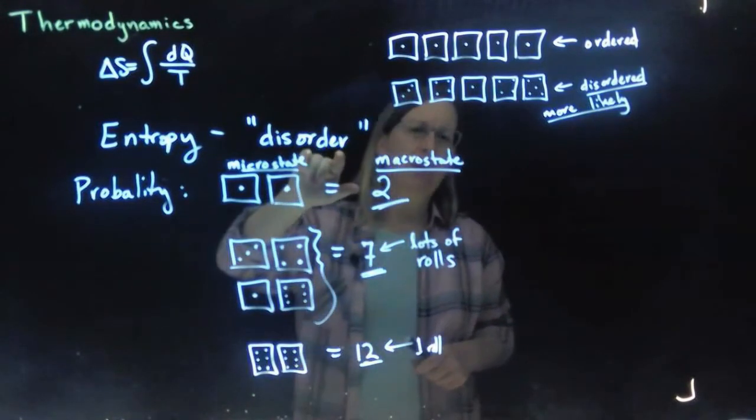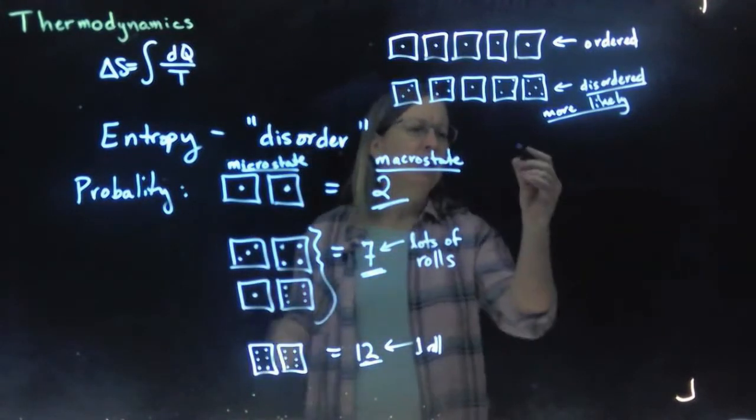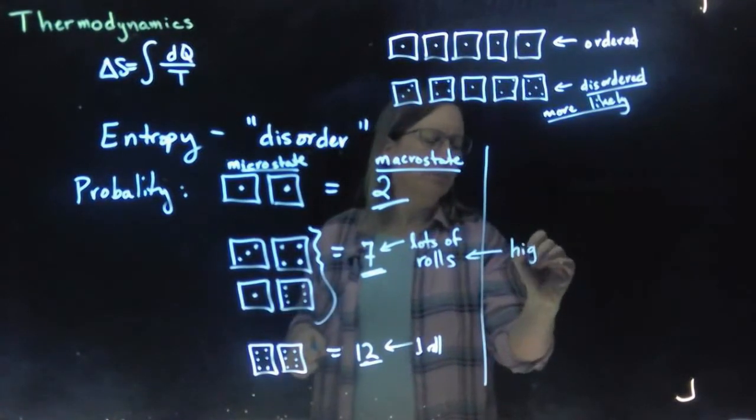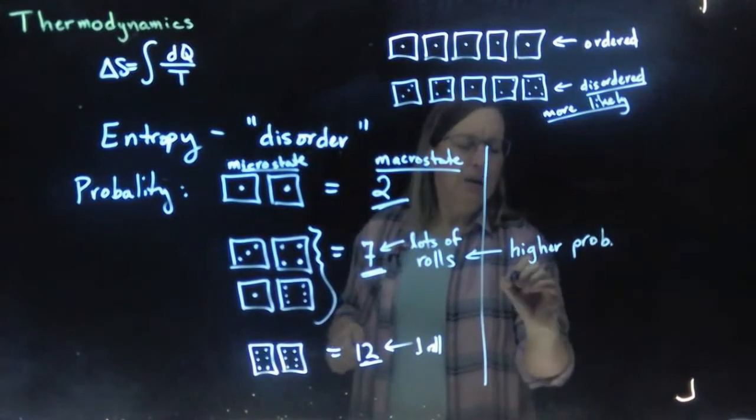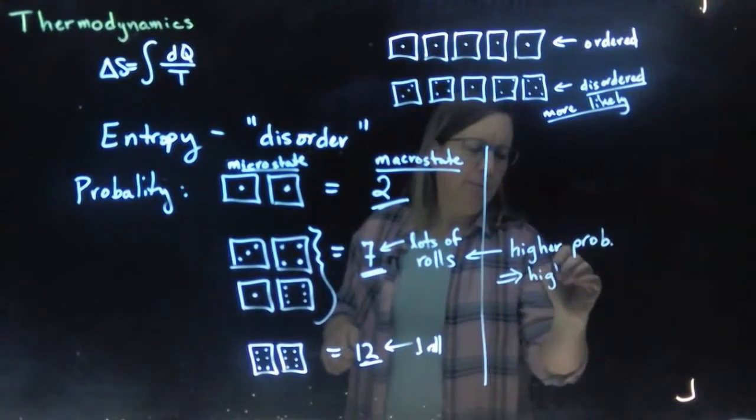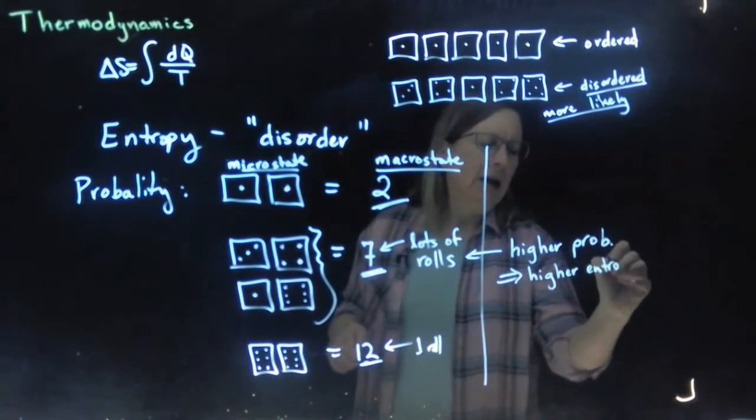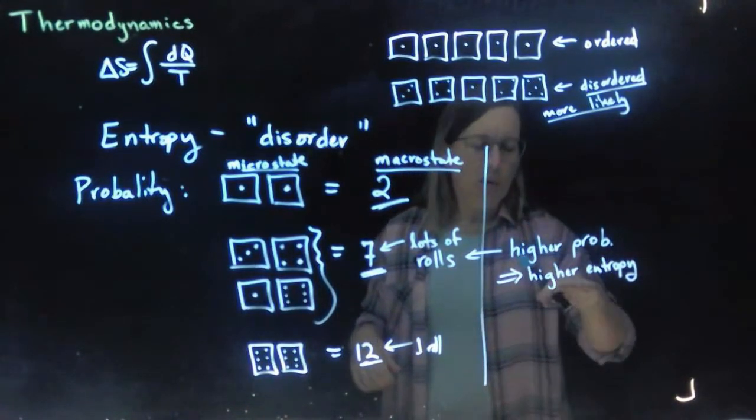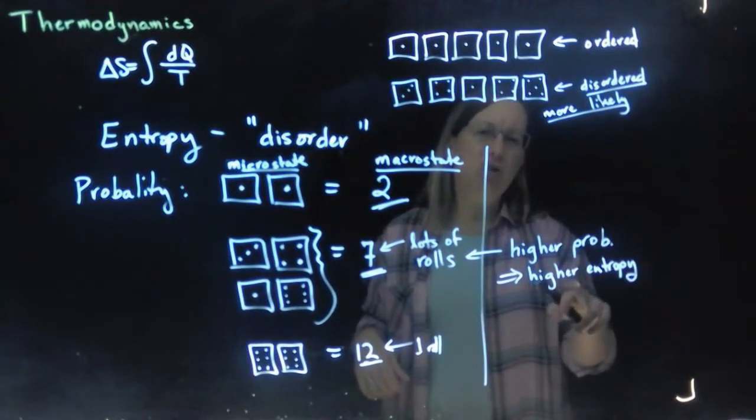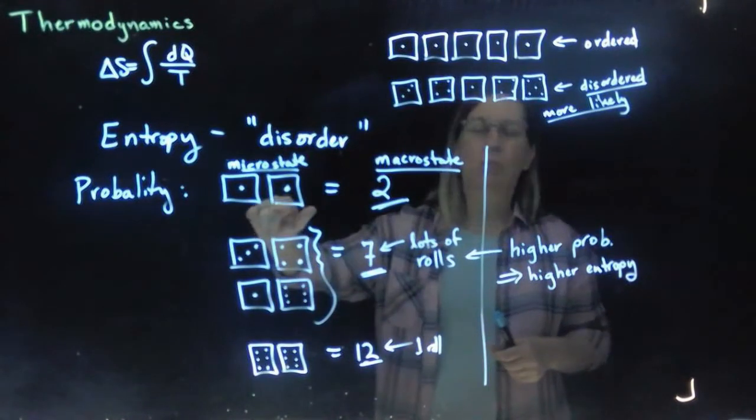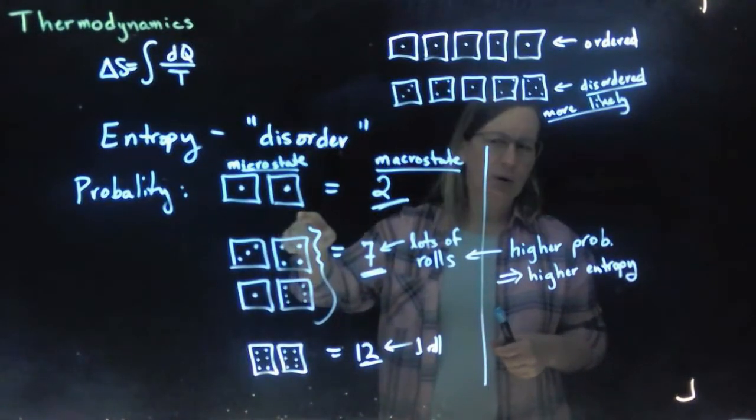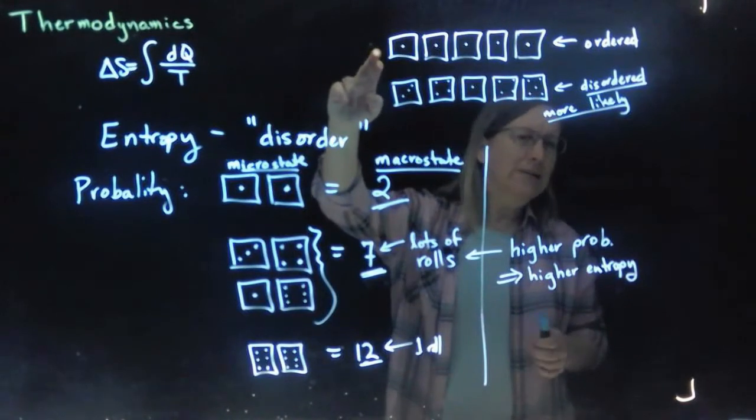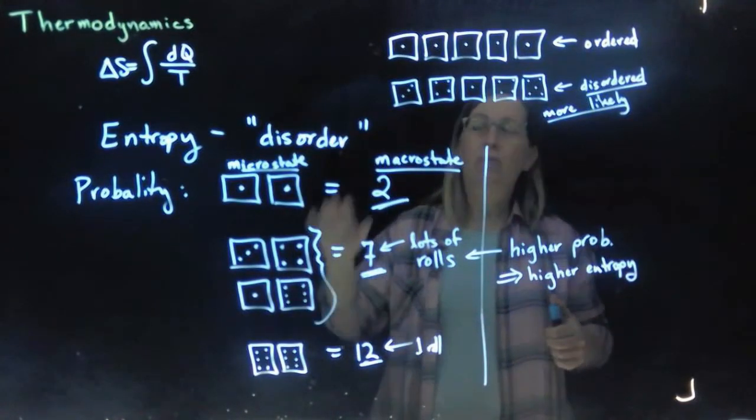And so, when we talk about entropy being a measure of disorder, what we're saying is that the higher probability, like this one, the higher probability to get a seven, means a higher entropy. And in general, things happen that are more likely. Things with higher probabilities are more likely, so we tend to go into higher probability states, especially when we're dealing with more than two objects. It's possible to roll two twos or two sixes. That happens one every 36 times on average. But five ones, that's a lot less likely. And if we're not talking five, we're talking Avogadro's number worth,